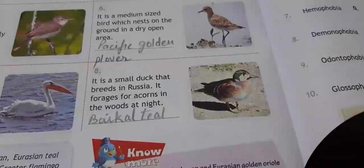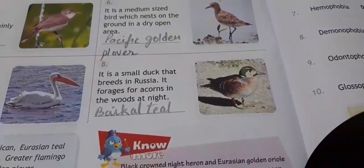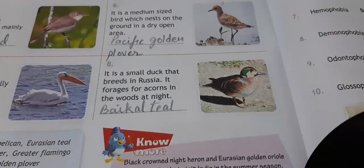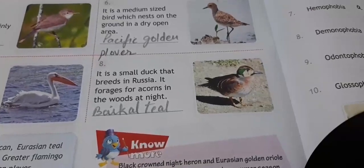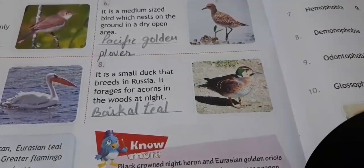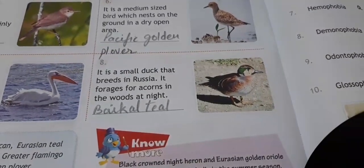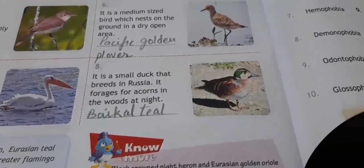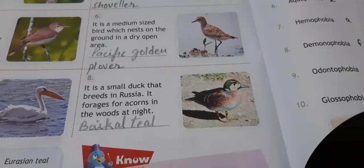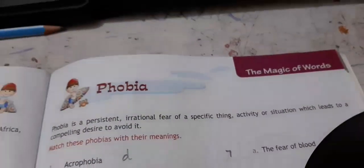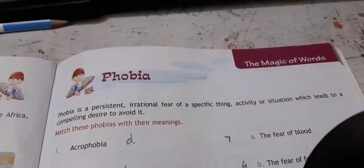The eighth one is a small duck that breeds in Russia. It forages for acorns in the woods at night. So now we are moving on to some magic of words — the third chapter.